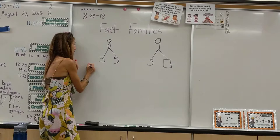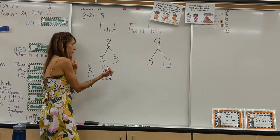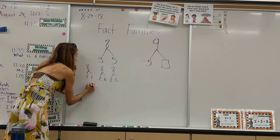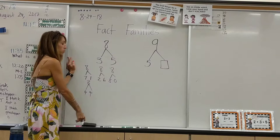For example, eight has several number bonds. It has eight, three, and five; eight, seven, and one; two and six make up eight; eight and zero make up eight; four and four make up eight; and three and five as we stated.